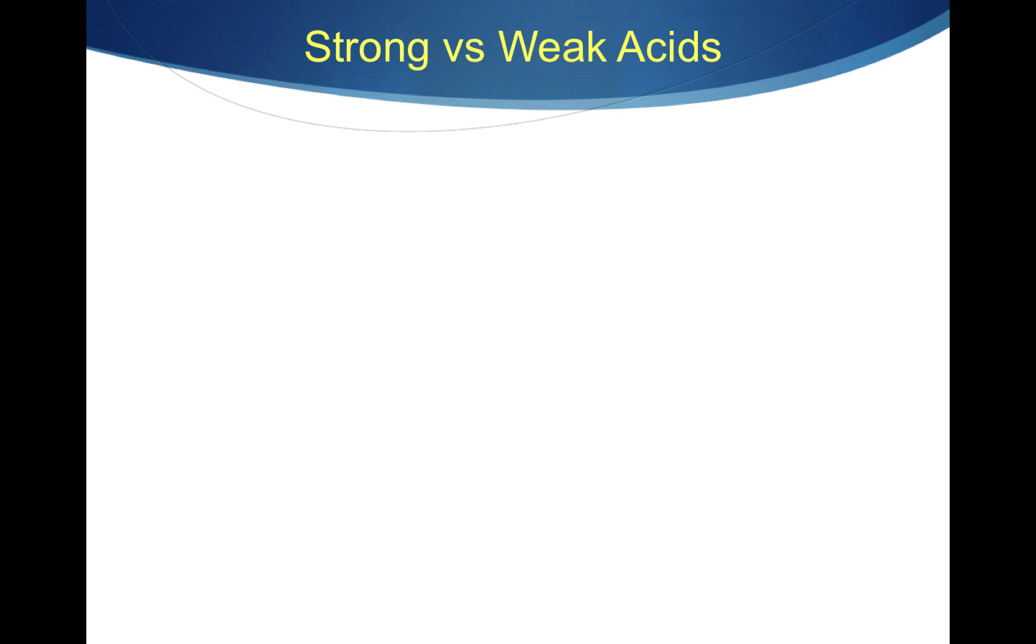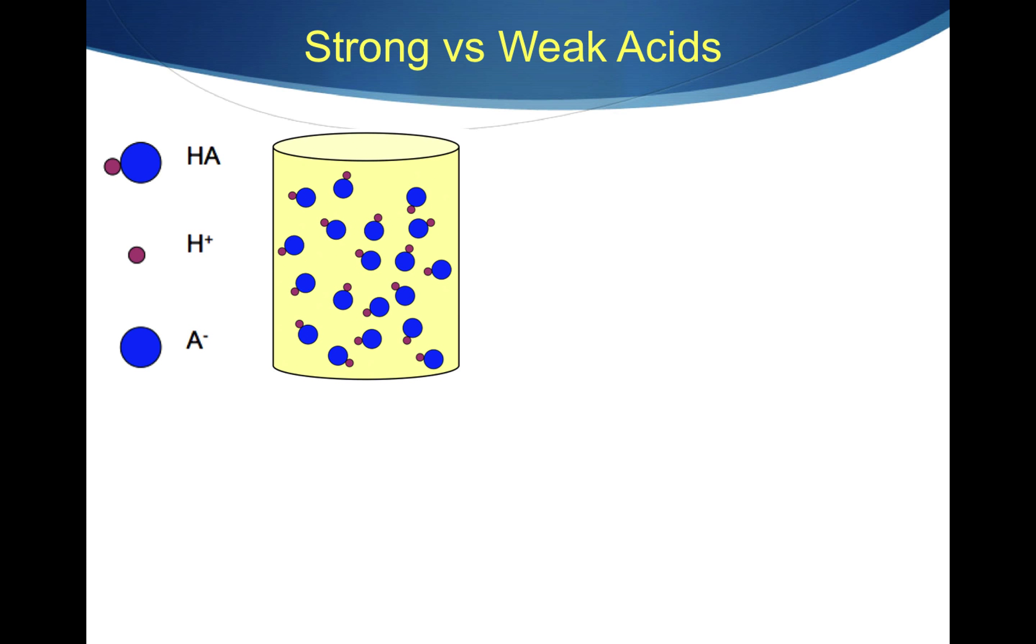Let's look at the difference between strong and weak acids. This diagram represents a container of HA molecules. This is the acid before it has been dissolved in water and has ionized.